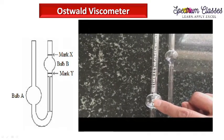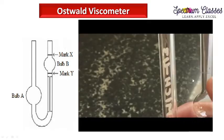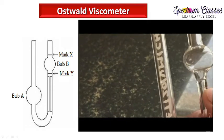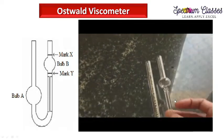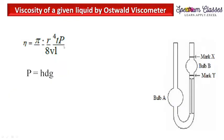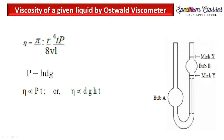This is the Oswald viscometer. This is bulb B, this is bulb A, this is the length of the capillary, and here you can see the etched marks — this is the volume between which we measure the time of flow. This is the capillary of radius r. P is the hydrostatic pressure, represented as h·d·g, where h is the height of the liquid column, d is the density of the liquid, and p is the driving force for flow.